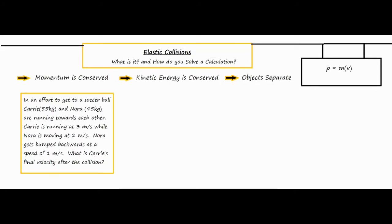One of the biggest concepts related to collisions is that momentum is conserved, which means the total momentum of the system before and after the collision is going to be constant, as long as you're not considering external forces. Also, kinetic energy is conserved — the kinetic energy of the entire system remains constant throughout. In elastic collisions, you're talking about two or more objects that collide and then separate without any deformation.